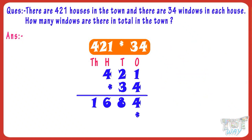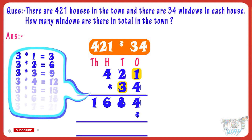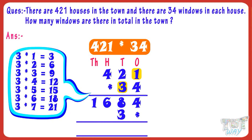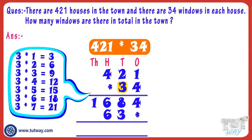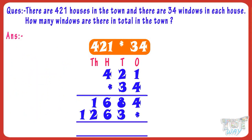Now put a multiplication sign below the one's place digit of the product. Now multiply 421 with the 10's digit, that is 3. 3 multiplied by 1 equals 3. Write 3 in the product starting at 10's place. 3 multiplied by 2 equals 6. Write 6 in the product at 100's place. 3 multiplied by 4 equals 12. Write 12 in the product at the next place. Now we have multiplied 421 with both the digits of 34.